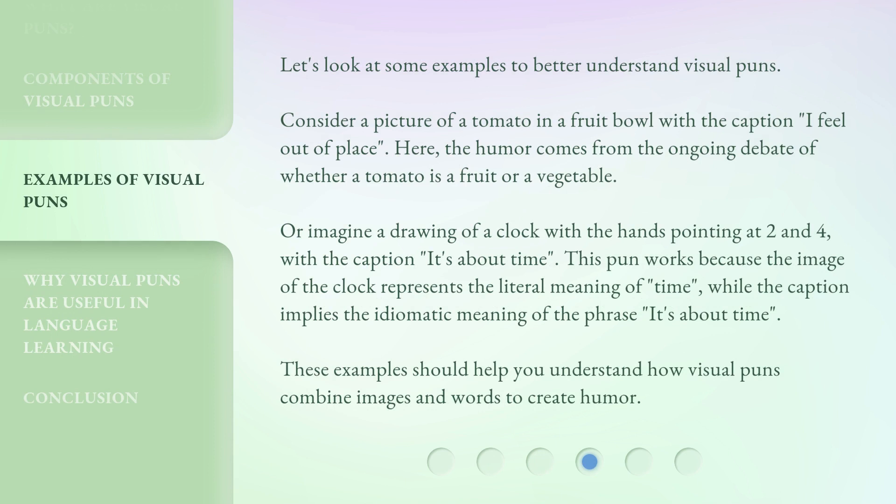Let's look at some examples to better understand visual puns. Consider a picture of a tomato in a fruit bowl with the caption 'one feels out of place.' Here, the humor comes from the ongoing debate of whether a tomato is a fruit or a vegetable. Or imagine a drawing of a clock with the hands pointing at two and four, with the caption 'it's about time.'